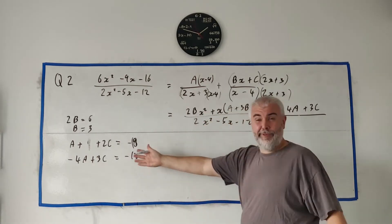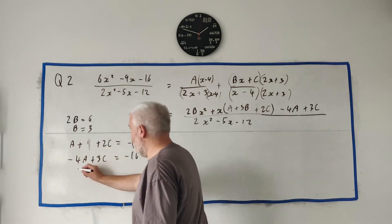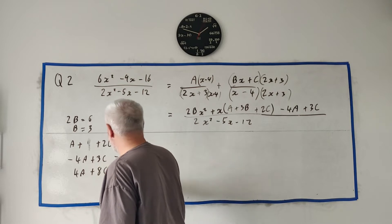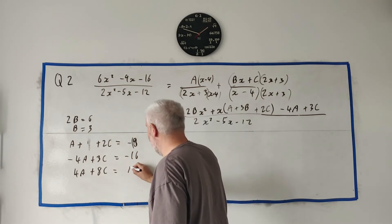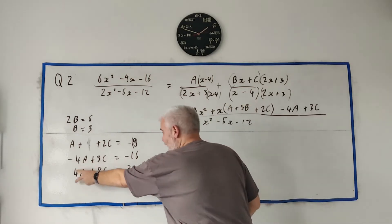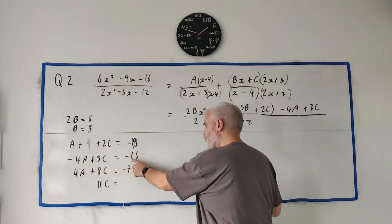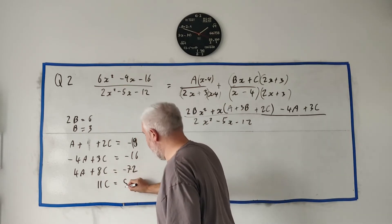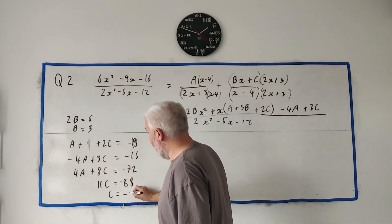Let's take this 9 out and bring it over. We get minus 9, or minus 18. And this is just a simultaneous equation. We can multiply the top by 4. We'd get 4A plus 8C is equal, let's see, 18 minus 8, that'd be 72, or minus 72. Add these together. The A's would cancel. So we get 11C is equal 88, or sorry, minus 88. That means C is equal minus 8.